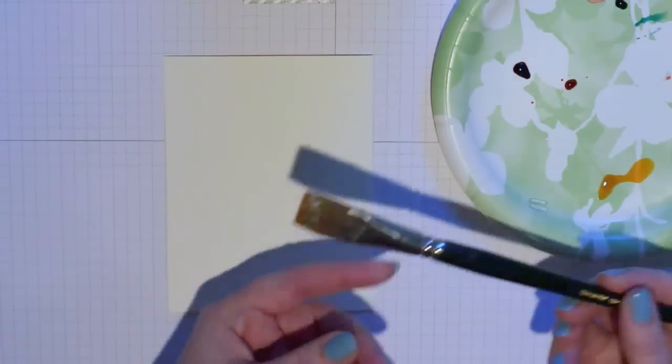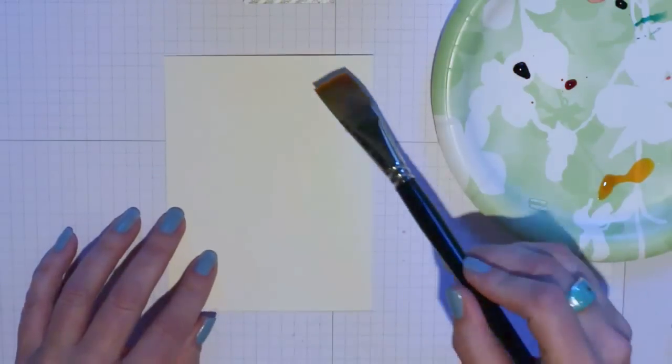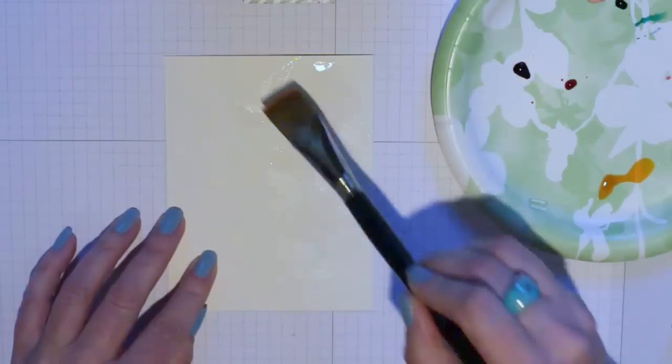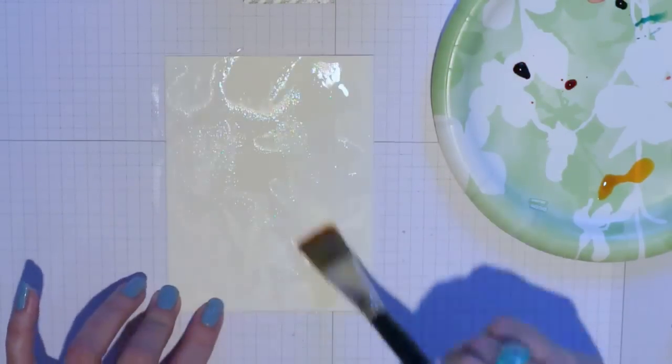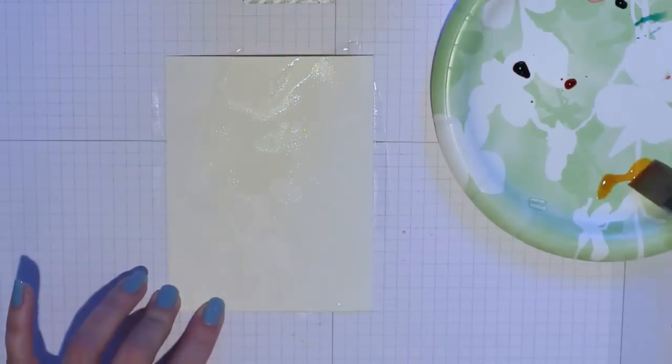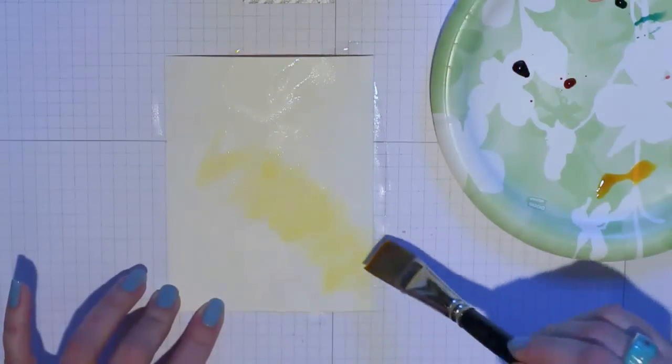I'm starting with watercolor paper and just a regular paintbrush. I actually keep my water in an ice cube tray when I'm watercoloring just to keep the different rinse waters for different colors separate. So that's where I'm getting my water from on the left.